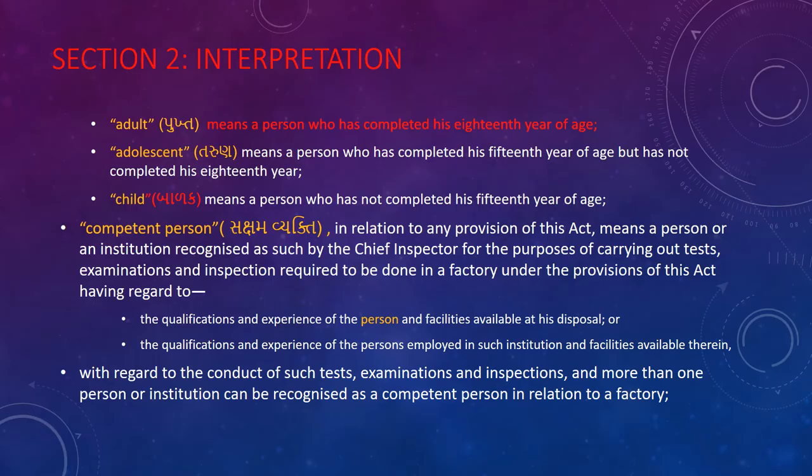In section 2, the interpretation section defines an adult as a person who has completed the 15th year of age. If the child has not completed 15 years, they are not considered an adult. The right person refers to a person meeting the defined criteria.